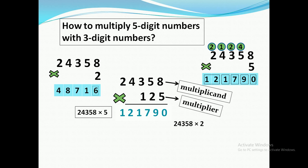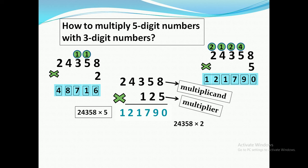We read the times table: two eights are sixteen — we write six here and carry one to the next digit. Two fives are ten, add one to get eleven — write one here and carry one. Two threes are six, add one to get seven — write seven. Two fours are eight — write eight. Two twos are four — write four. Before writing this amount down, we place a zero in the units place and then place the other numbers.